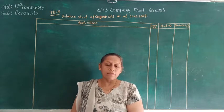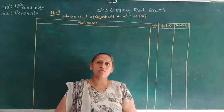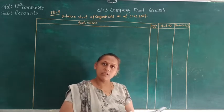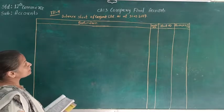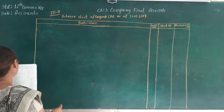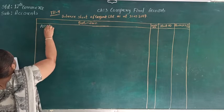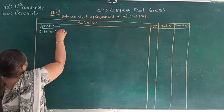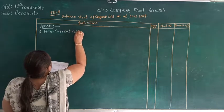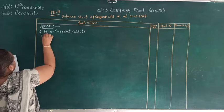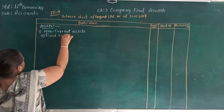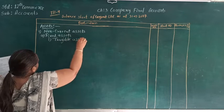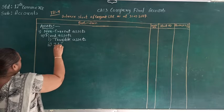Here they are asking us to prepare the asset side of the balance sheet. As we discussed before, first we have to write the main head and subhead of the balance sheet, then we write the balance of the account. So in illustration number 9, balance sheet of Gujarat Limited as on 31st March — the very first head of the asset side is non-current asset, and under that, fixed asset. Fixed asset is again divided into two categories: tangible asset as well as intangible asset.